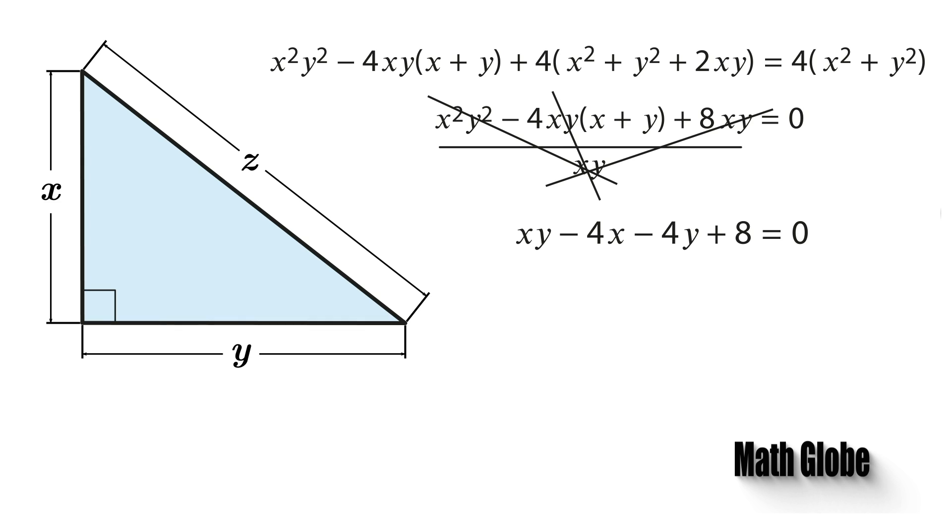So far everything was straightforward algebra. Now, let's do something clever. First, add 8 to both sides to make the left hand side factor.